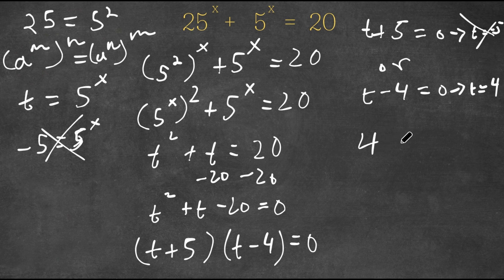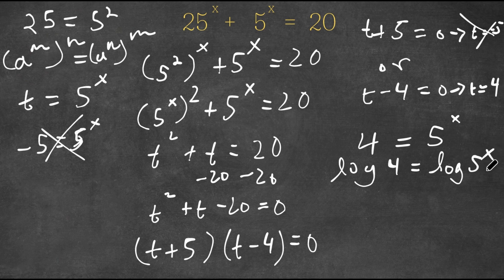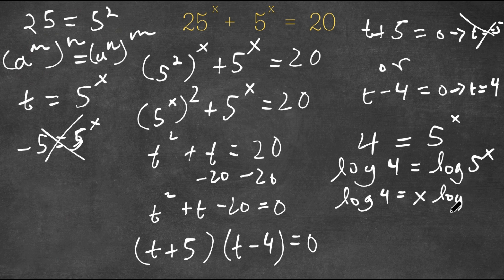So now we have 4 is equal to 5 to the power of x. Now I'm going to take the log on both sides. So I have log 4 equals log 5 to the power of x. And then this would get me to log 4 equals x times log 5.